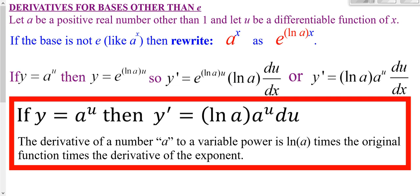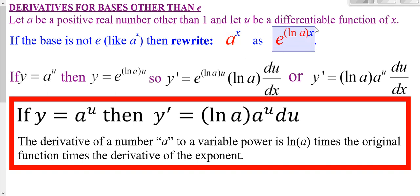If you have a base of A, you can rewrite A as e to the power of ln(A). Because e and ln undo each other, what's in the box is really just A. We know how to take derivatives of e to a power, so it's helpful to think of A^x in terms of e^(x·ln A), because we can then apply what we've already done for taking derivatives.